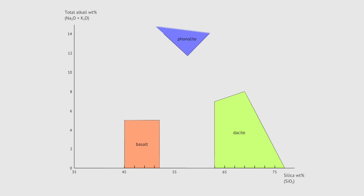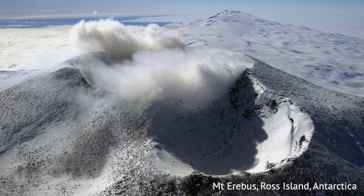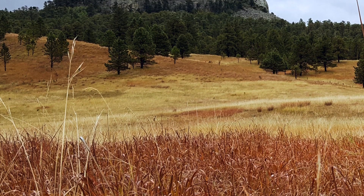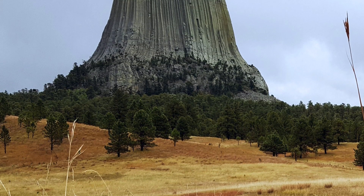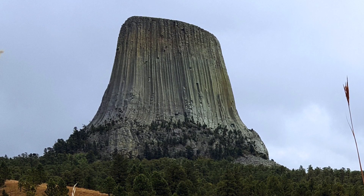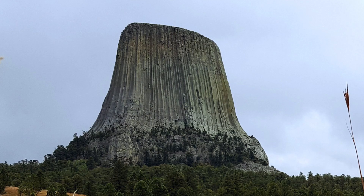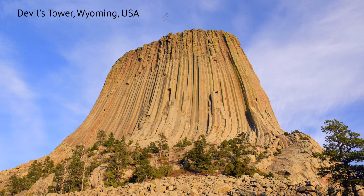Phonolite is a less common rock that contains a high proportion of alkali metals. It has been known to crystallize from lava that became stuck inside volcanic vents, forming huge plugs of rock. The Devil's Tower in Wyoming, USA, is a plug that remains standing even after the surrounding volcano was eroded.